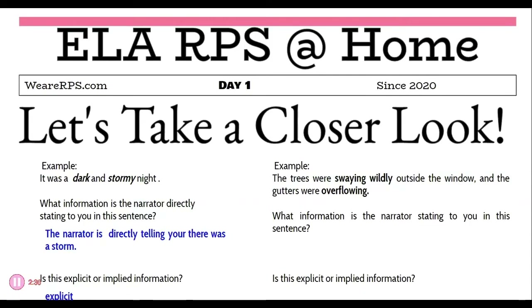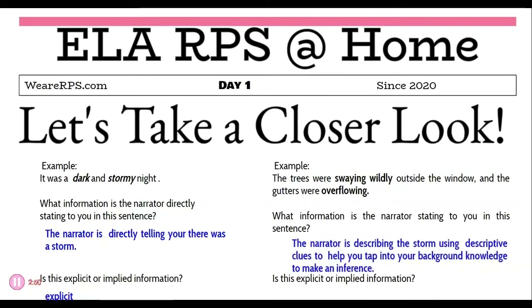In example two, the sentence is: 'The trees were swaying wildly outside the window and the gutters were overflowing.' Instead of the author telling us directly there was a storm, they are describing the characteristics of a storm to help us make an inference. The narrator uses descriptive clues to tap into your background knowledge. So this is implied information.